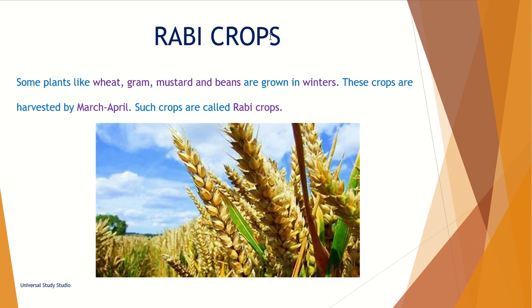Rabi crops. Some plants like wheat, gram, mustard, and beans are grown in winters. These crops are harvested by March or April. Such crops are called Rabi crops.